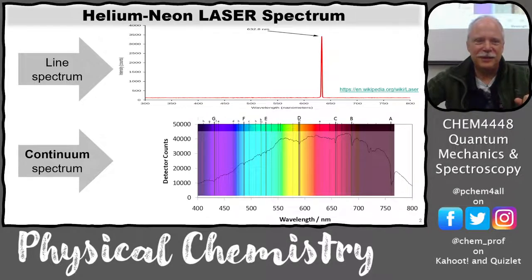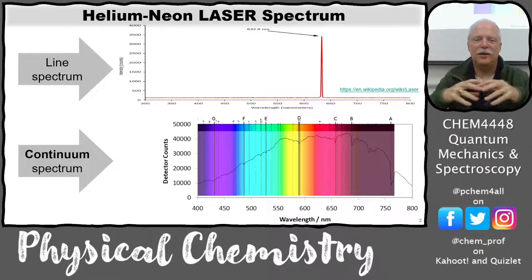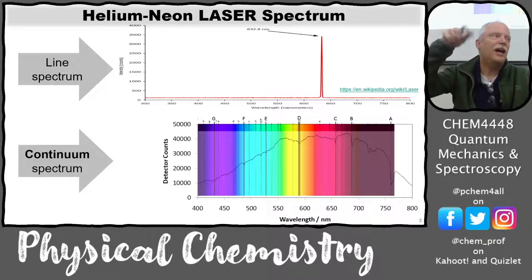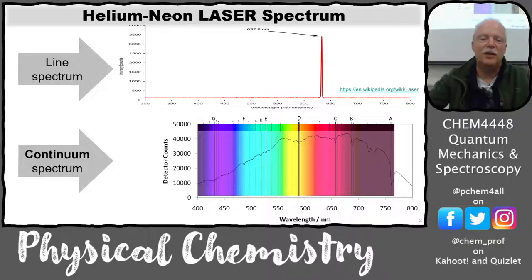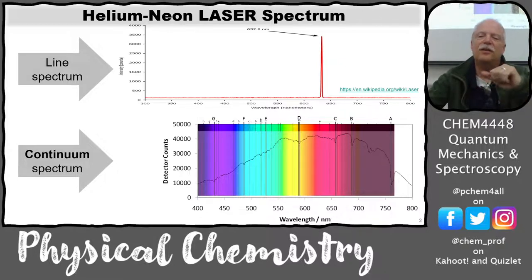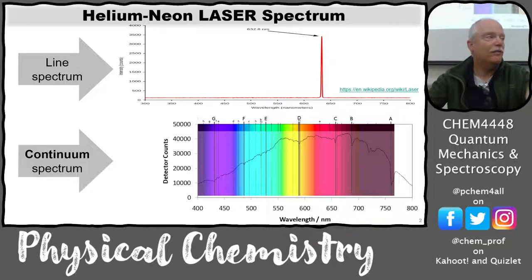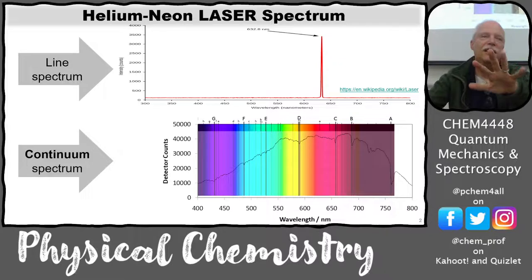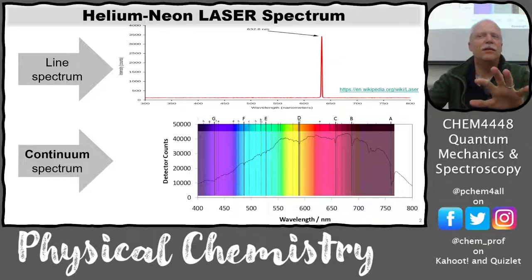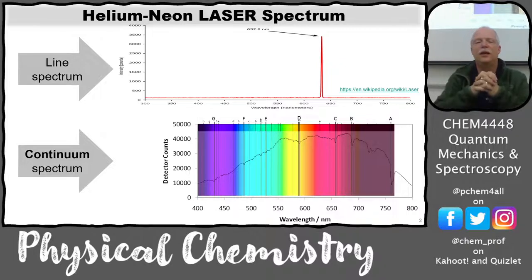We've seen a couple of spectra. The lower one is the emission spectrum of the sun, which is a continuum. There are certain Fraunhofer lines that are dips — those are atomic absorption lines — but in general you have light at all the wavelengths. What was difficult to understand in terms of classical physics was not the continuum part; it was that the energy went back down at short wavelengths — that was the UV catastrophe. It was a function of temperature, not the material. You would get a profile of light off of any hot object, and it didn't matter if it was copper or steel. Those were things that led to quantum mechanics.